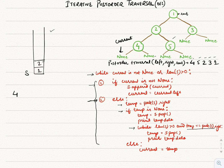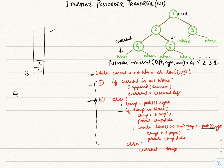The loop continues as the stack length is still greater than zero but current is still none, so it falls under the second condition again. We explore the right side of node 2, which is 5. Temp stores 5, which is not none, so it falls under the else condition and current is now set to 5.